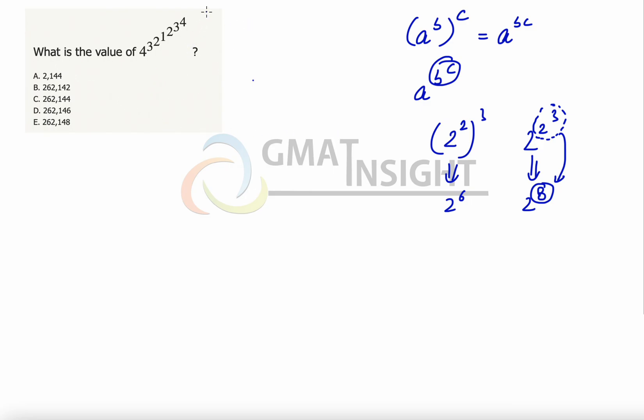Now in this question, there are multiple exponents available here. So what we need to do is start calculating it from the highest possible powers, which means this can further be written as 4^3^2^1^2^3^4.